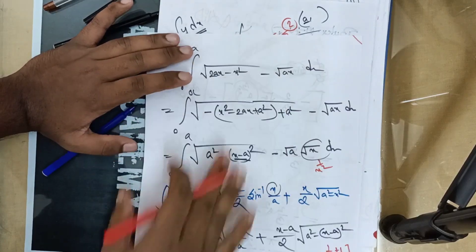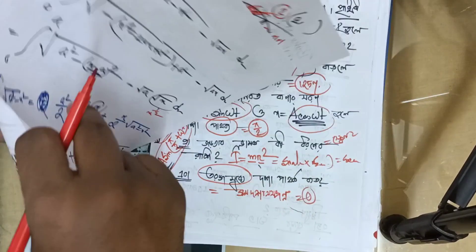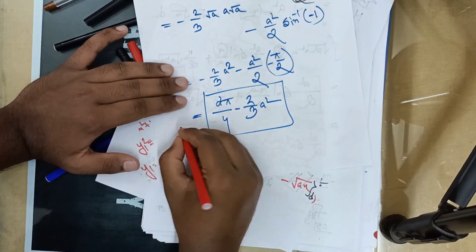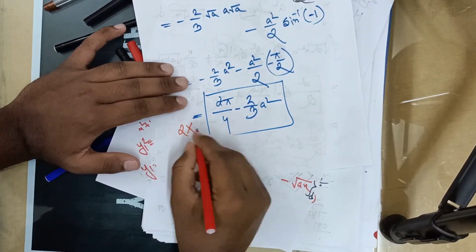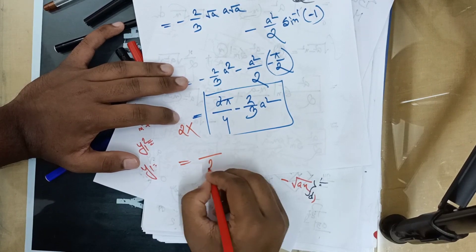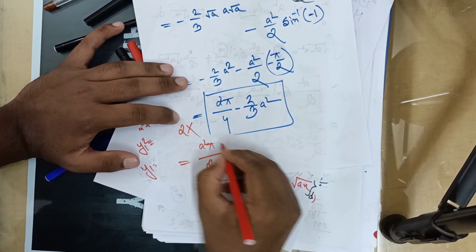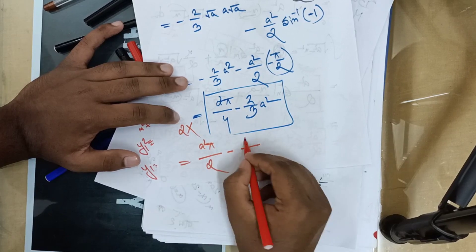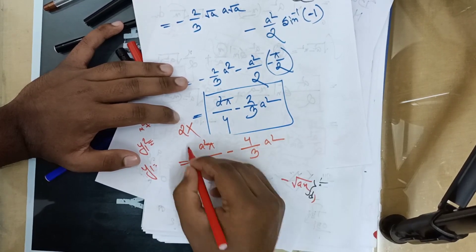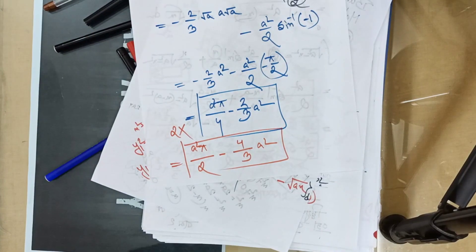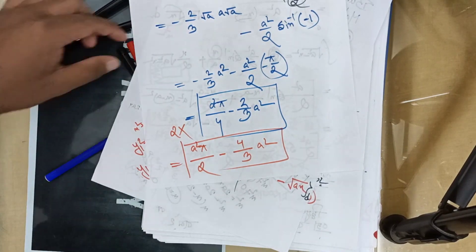So we have 2 times 2. The total gives 4, by passing error is 3. So we have 2 times which gives 4 times a squared pi, giving 2 times a squared pi divided by 2, minus 4 by 3 times a squared.